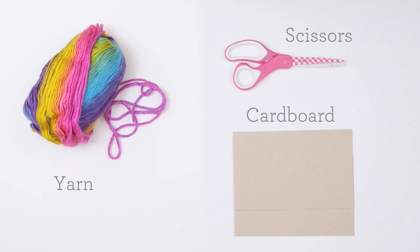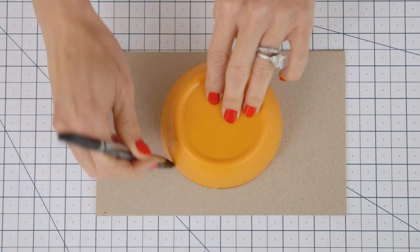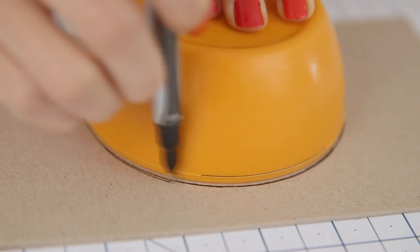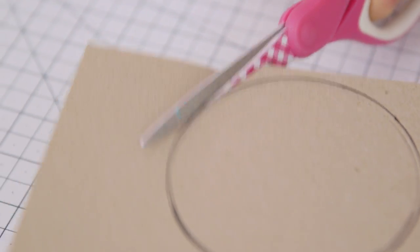All you're gonna need to get started is some yarn, cardboard, and a pair of scissors. First we're going to create our pom-pom maker using some cardboard. Simply draw or trace a circle onto your cardboard. Mine's about four inches in diameter which is gonna make a pretty large pom-pom, but you can do any size. And then cut it out using some sharp scissors.